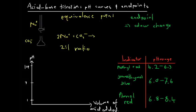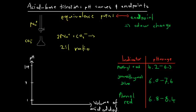We want to get the equivalence point and the end point as close as possible to one another — we want to stop the titration when the reactants are present in the ratio given by the reaction, in order to calculate the concentration of the unknown solution to a high degree of accuracy. To ensure this, we choose an indicator that will change colour at or close to the equivalence point.